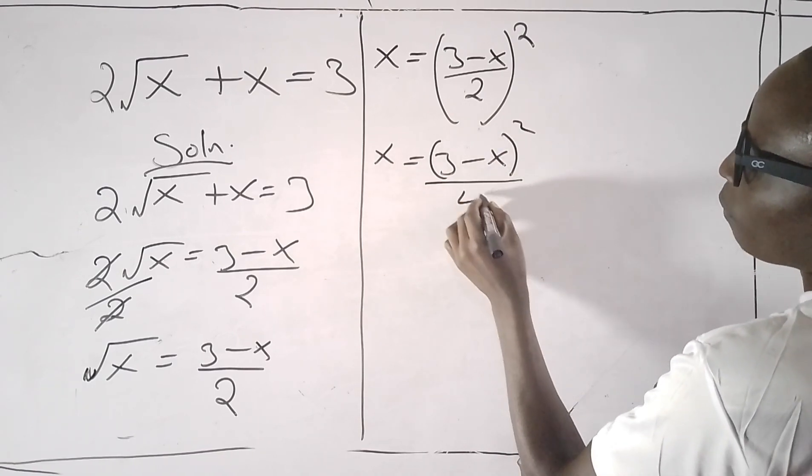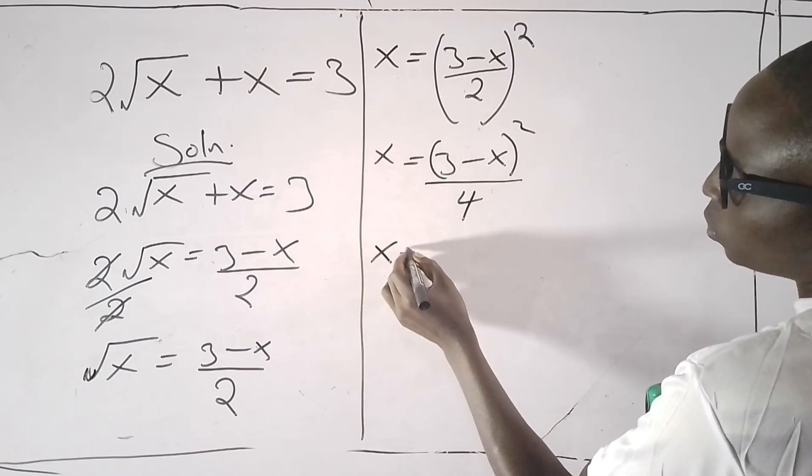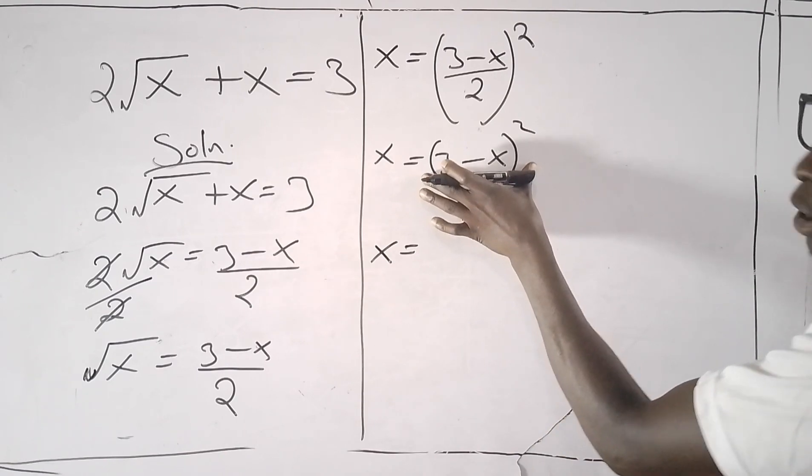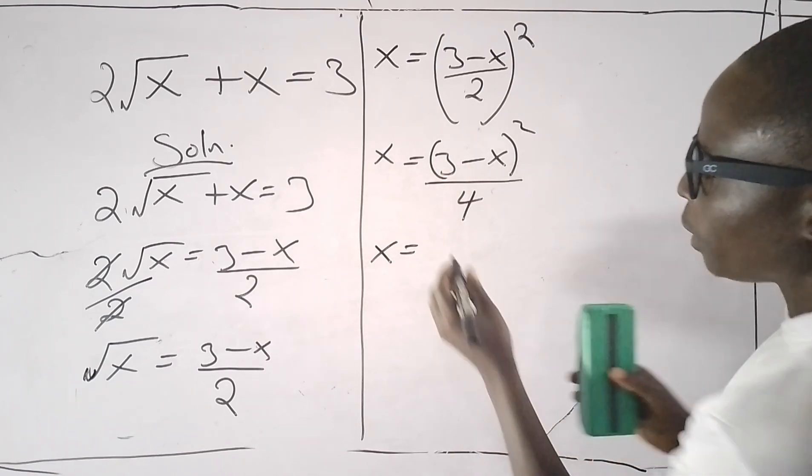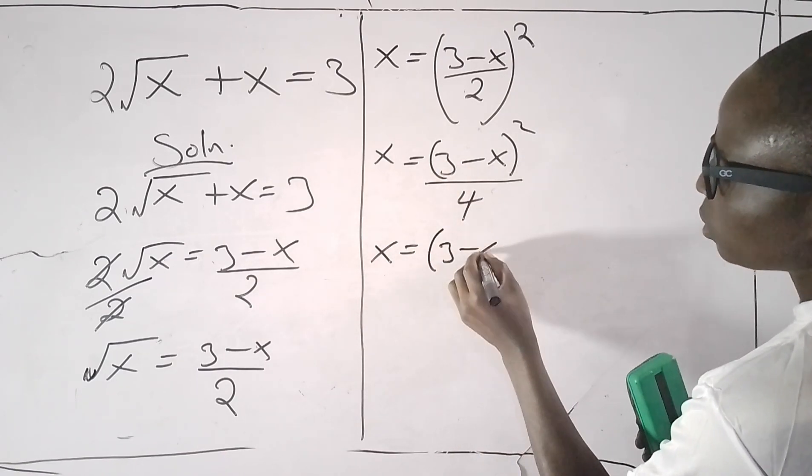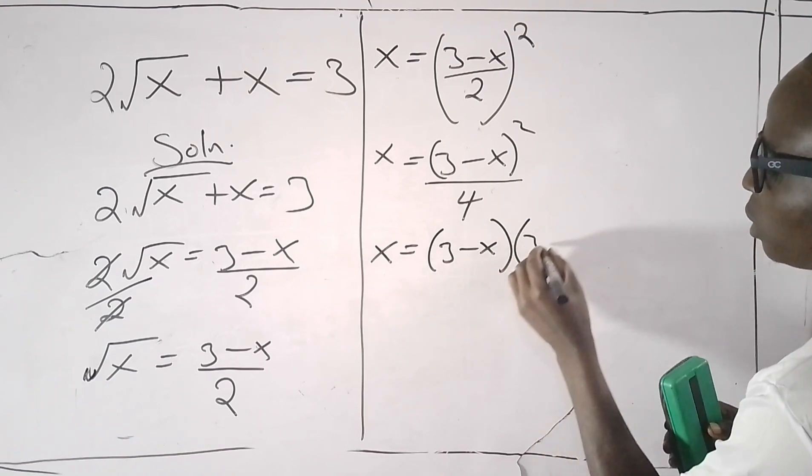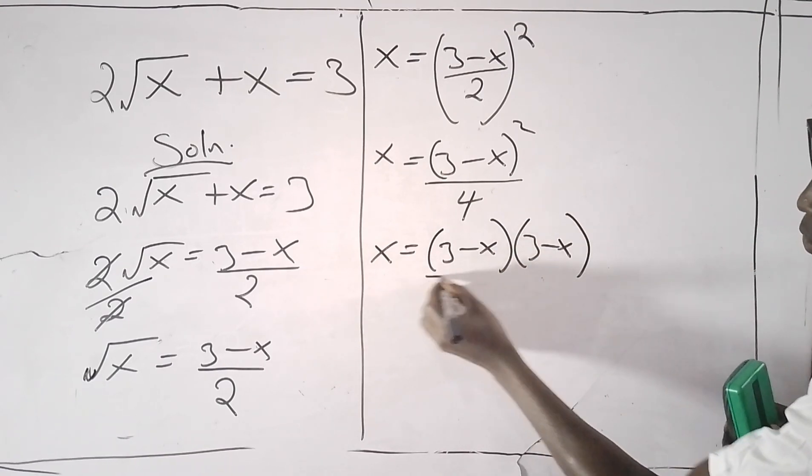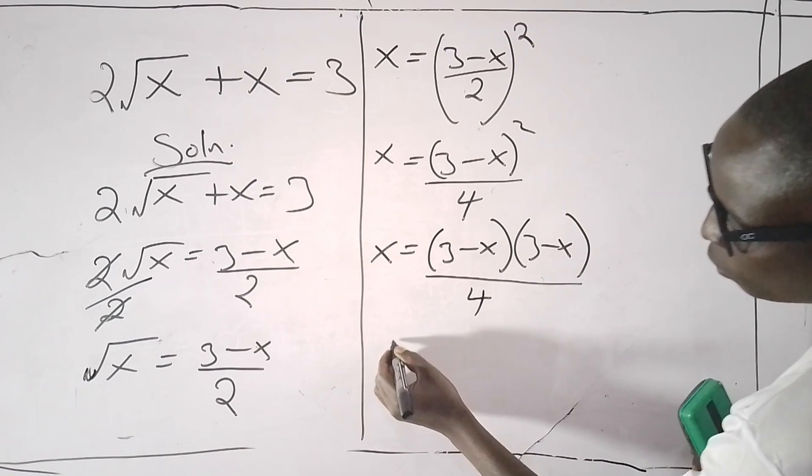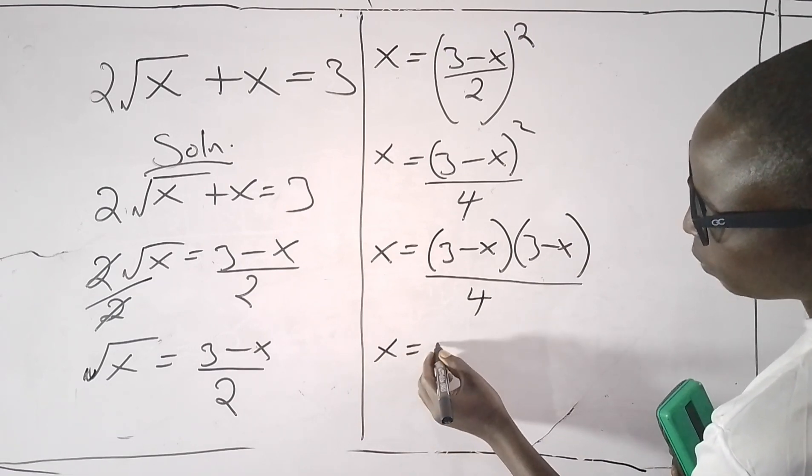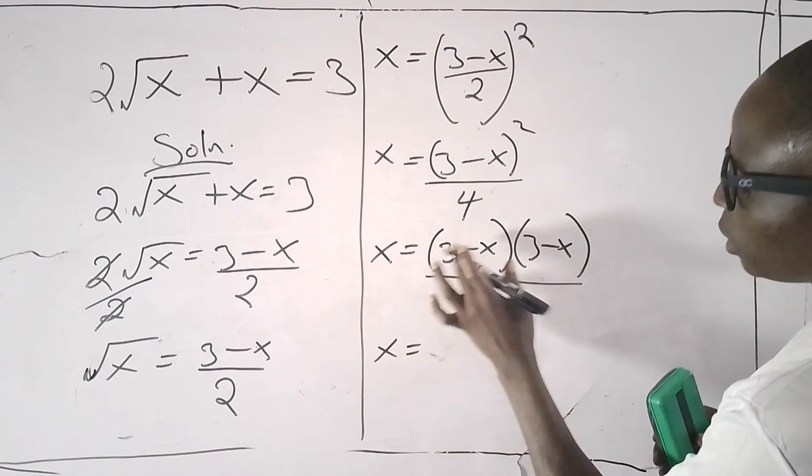This is x equals (3 - x)² over 4. This means this bracket will be written in two places: (3 - x) and another (3 - x), everything over 4.